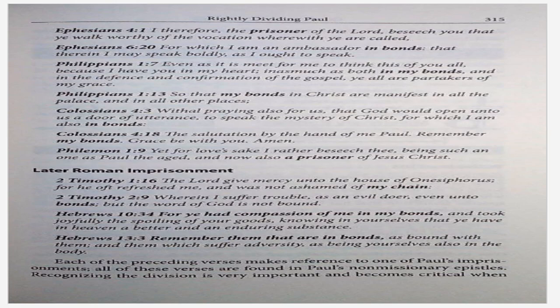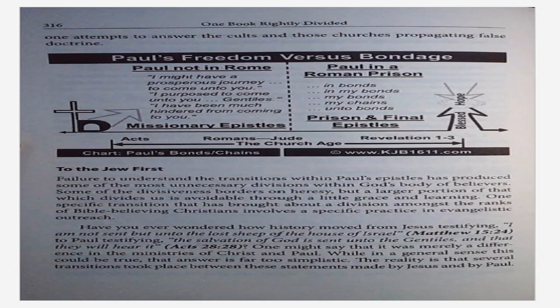Recognizing the division is very important and becomes critical when one attempts to answer the cults and those churches propagating false doctrine. The chart on page 316 is titled Paul's Freedom vs. Bondage. To the Jew first: failure to understand the transitions within Paul's epistles has produced some of the most unnecessary divisions within God's body of believers. Some of the divisiveness borders on heresy, but a larger portion of that which divides us is voidable through a little grace and learning. One specific transition that has brought about a division amongst the ranks of Bible-believing Christians involves a specific practice and evangelistic outreach.